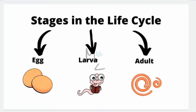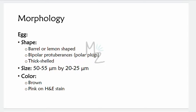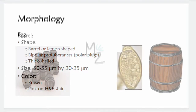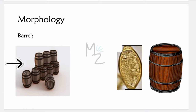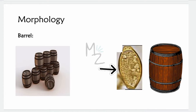Before starting the morphology, there are three developmental stages in the life cycle: egg, larva, and adult. The egg is barrel- or lemon-shaped, with bipolar protuberances and polar plugs on both sides, and it is thick-shelled. As you can see in this picture, compare the egg and the barrel — the barrel's upper and lower parts are narrow compared to the widest middle part, and the same goes for the egg.